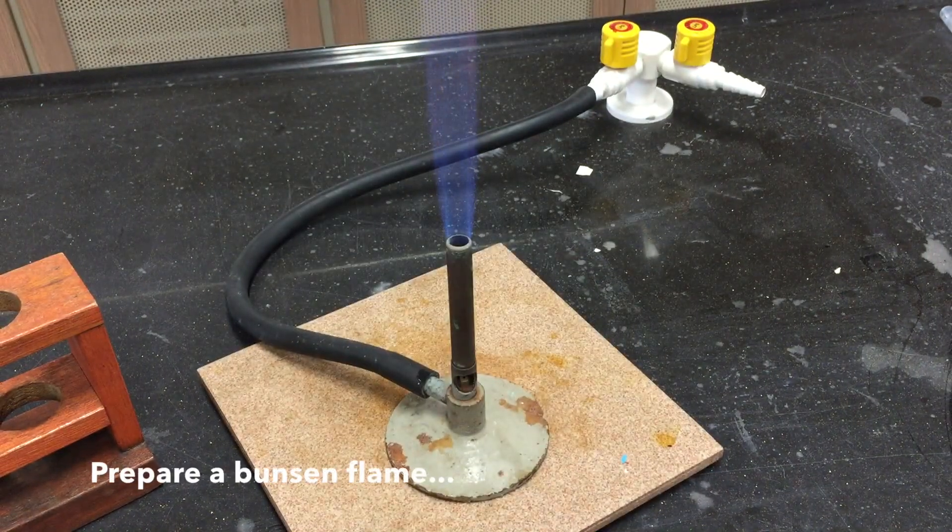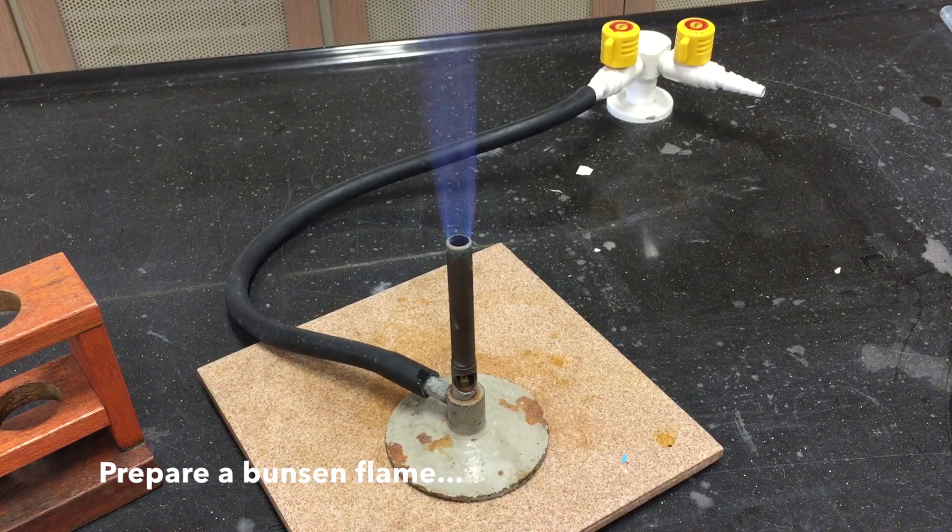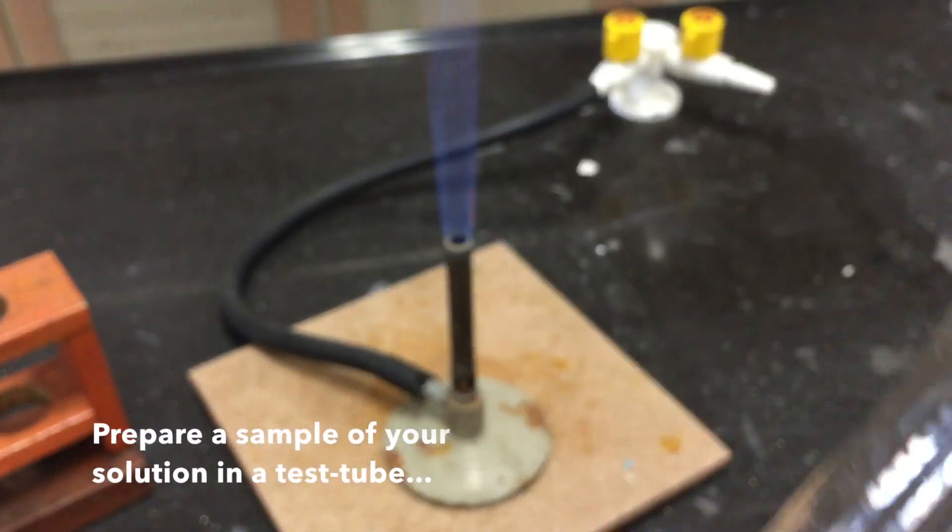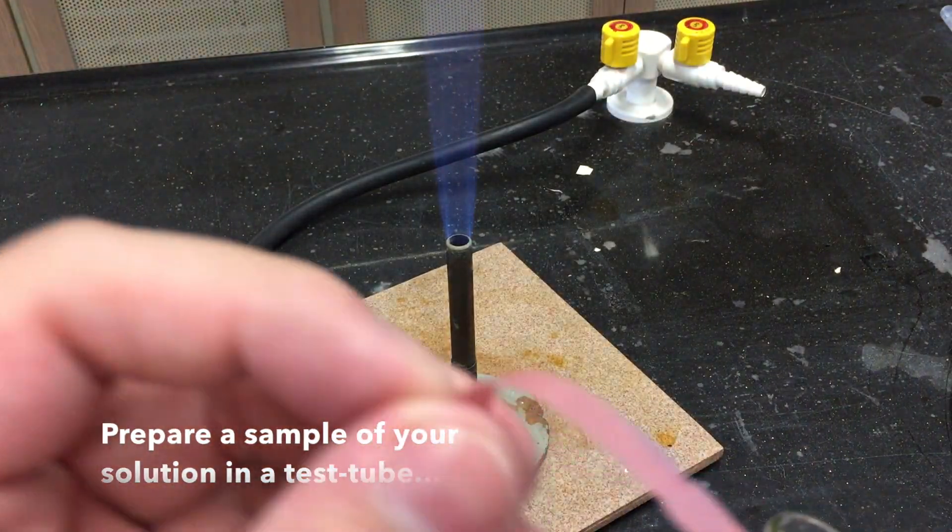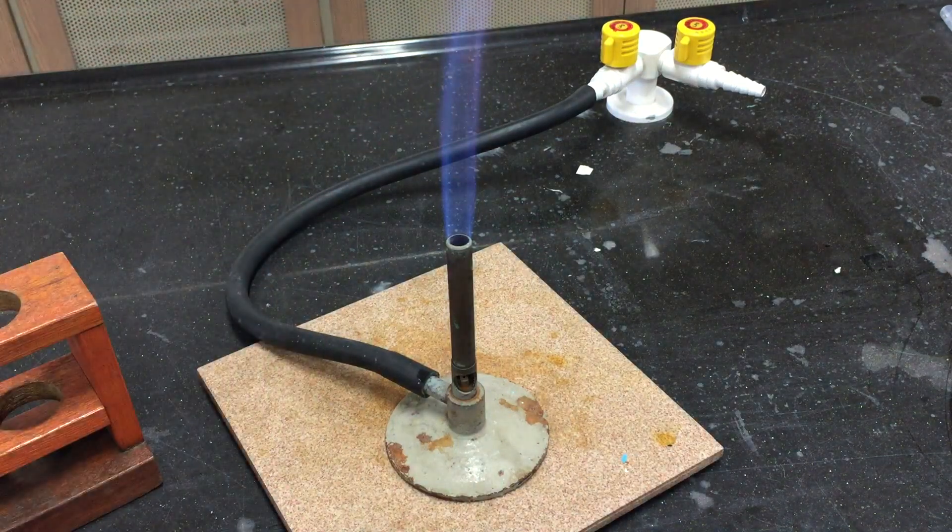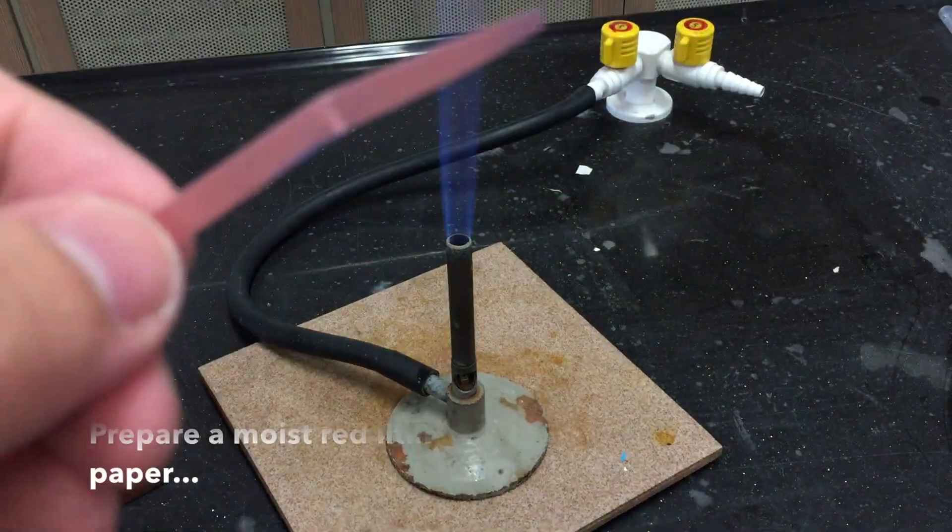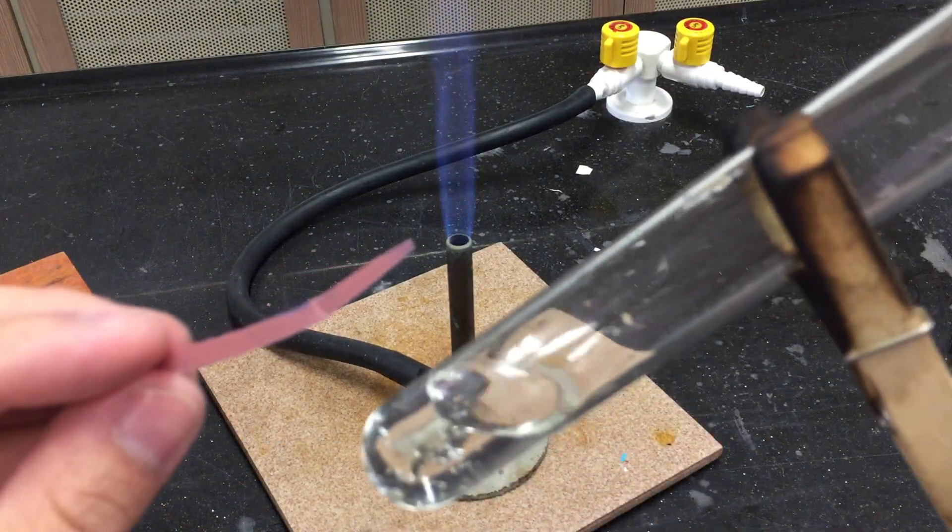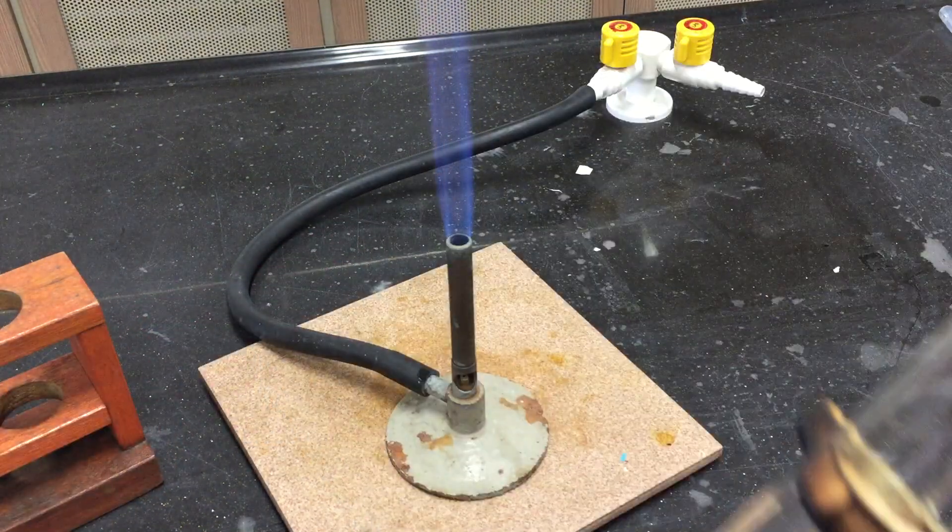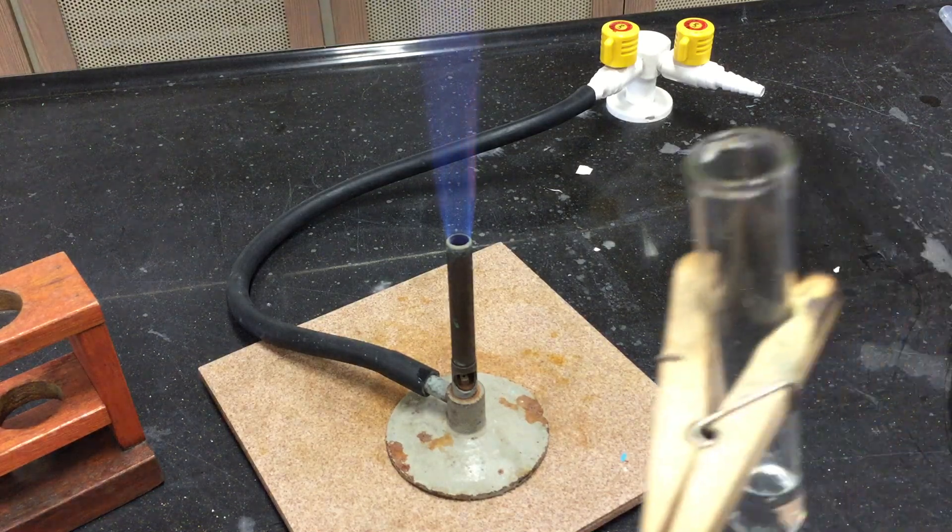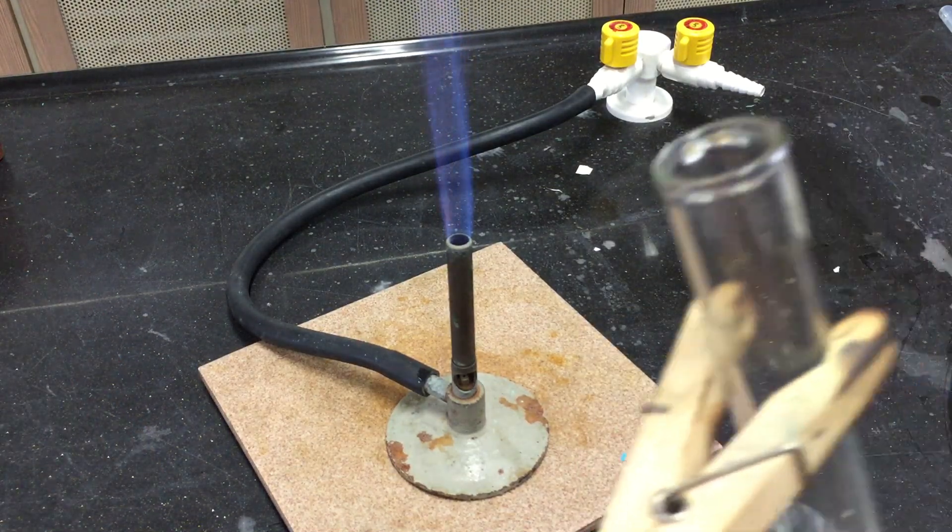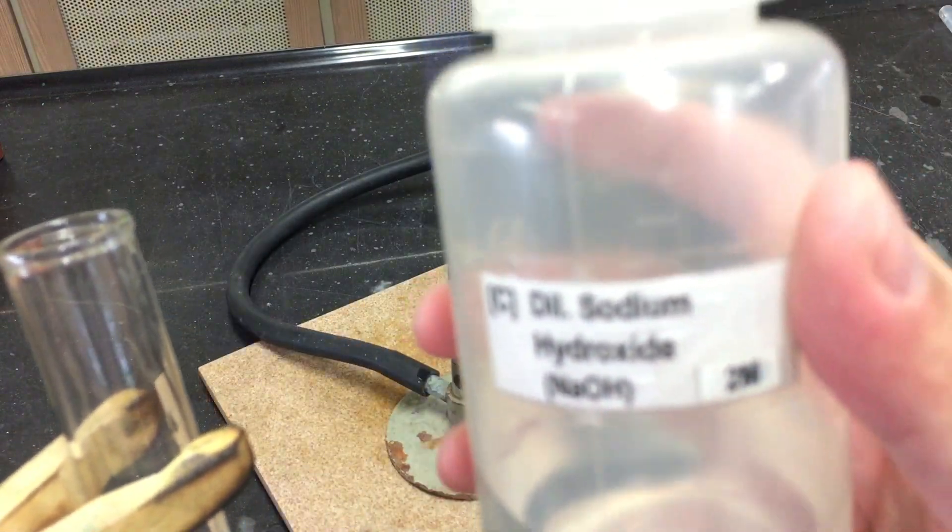For this test, it would require a Bunsen flame and a test tube to contain your solution. You will also need a moist red litmus paper. Ensure that you have everything necessary before you begin the test.